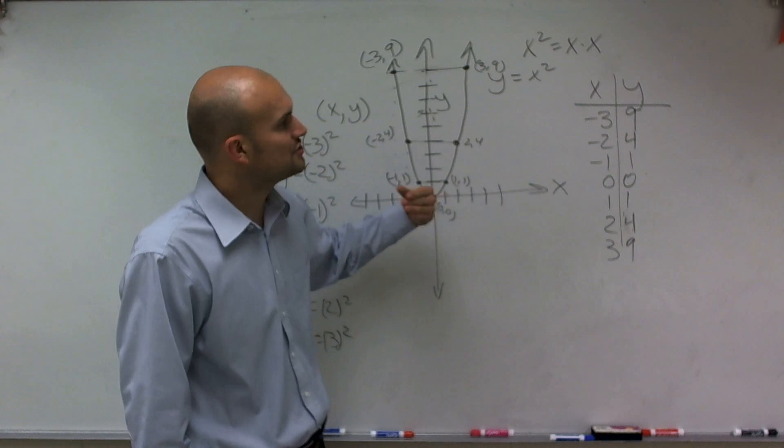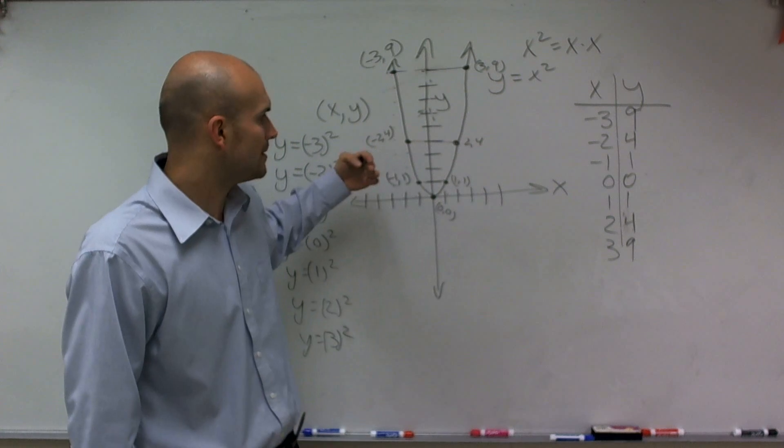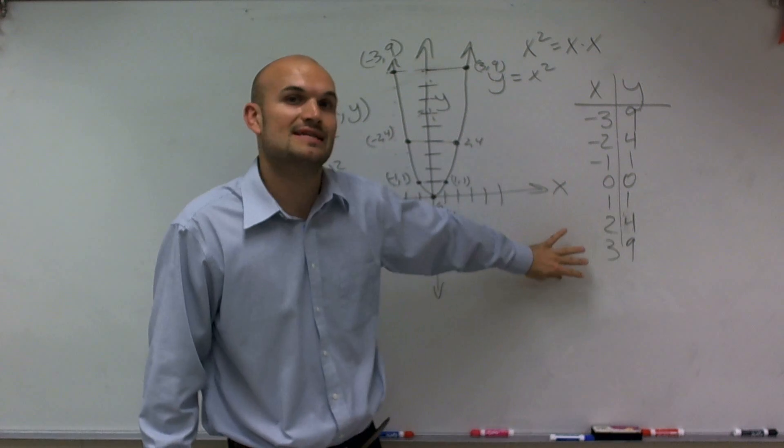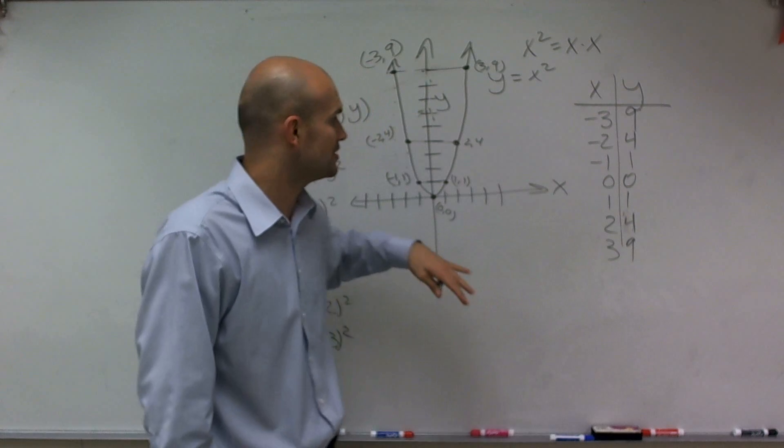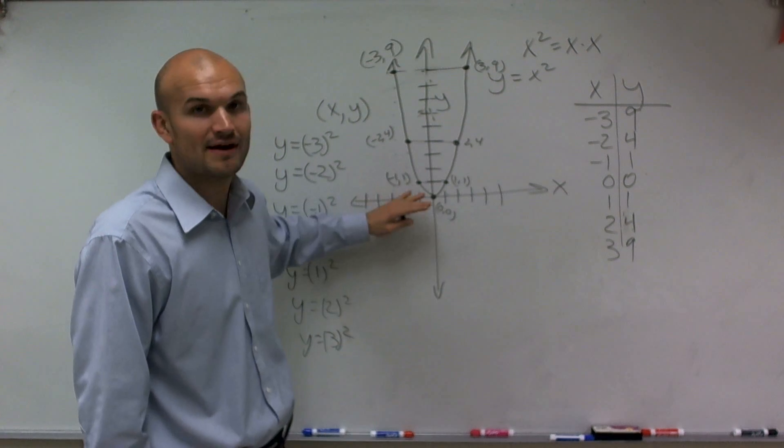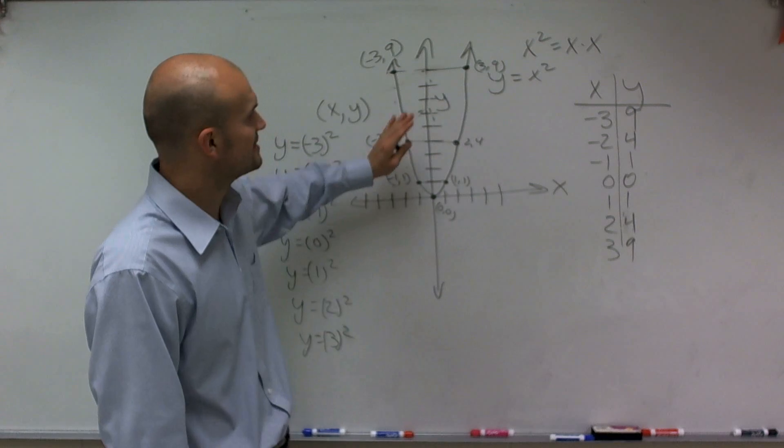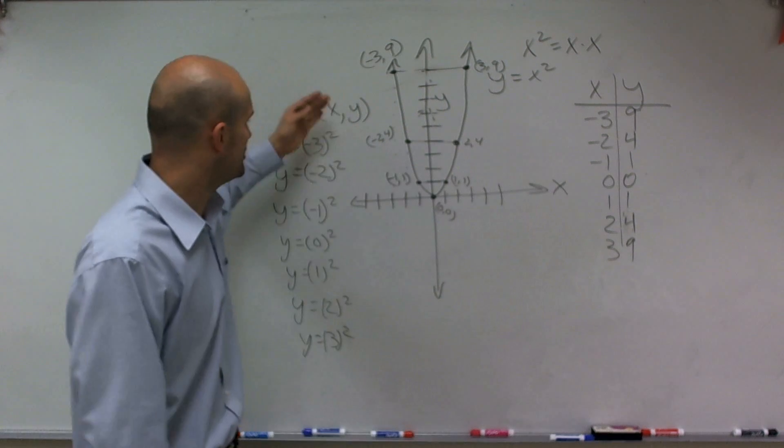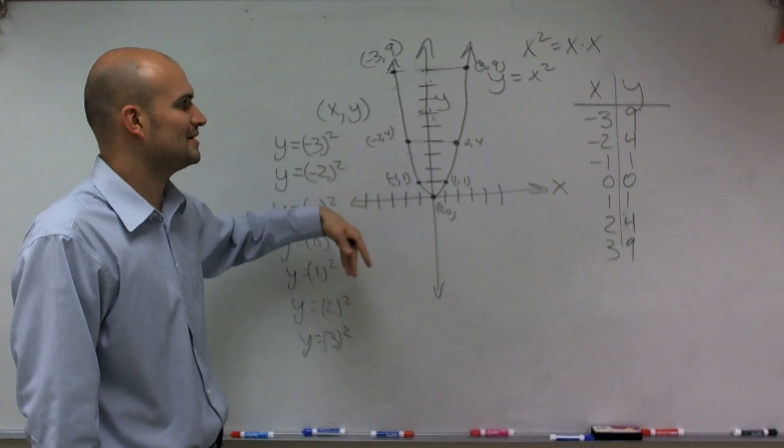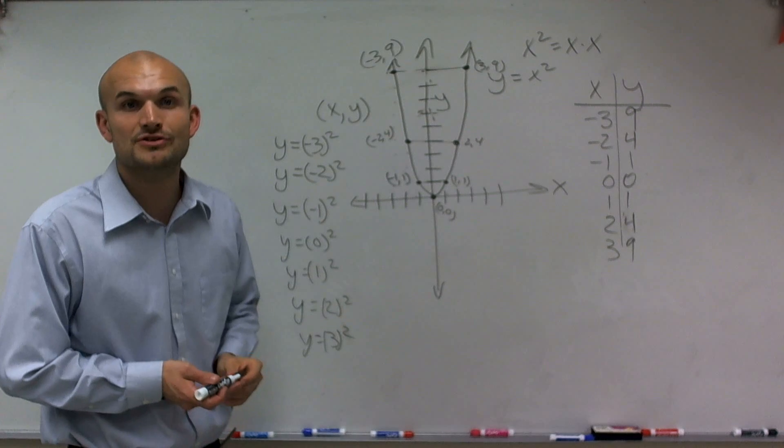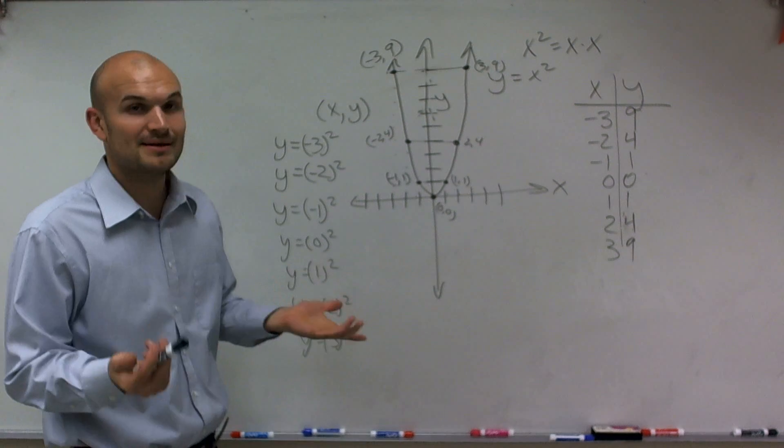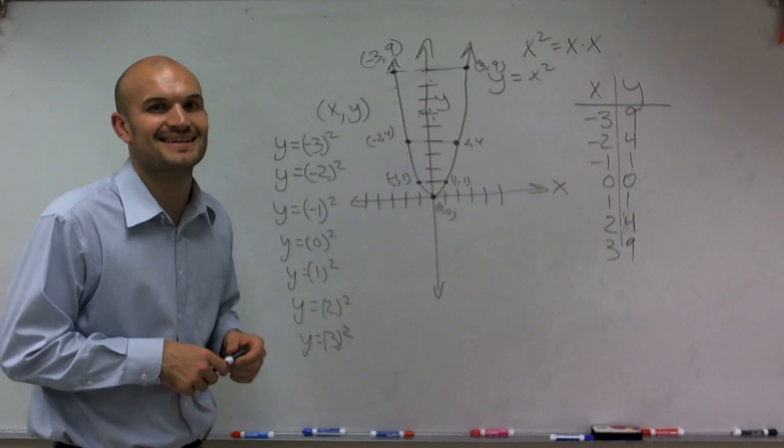So that's something very important that when we talk about the other graphs, you'll be able to see. But when learning how to graph, the main important thing is being able to use a table. And when we get to different functions, I'll show you how that's going to alter depending on where your graph is. But just understand you use your table, you plug it in, and you get a table of values. And then also remember you have symmetry as well. So there you go, ladies and gentlemen. That's how you graph a quadratic. Thanks.